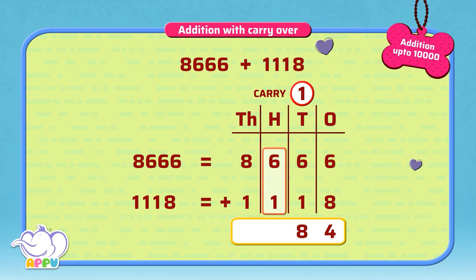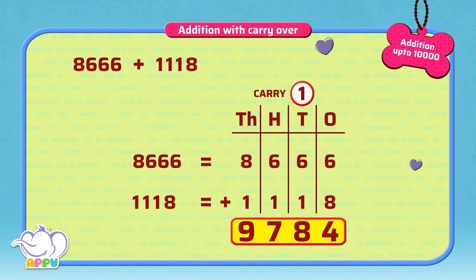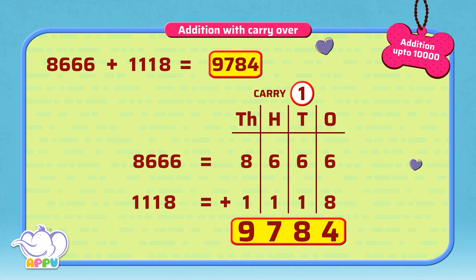For the hundreds place, we add 6 plus 1, which equals 7. For the thousands place, we add 8 plus 1, which is equal to 9. The answer is 9,784. So 8,666 plus 1,118 is equal to 9,784.